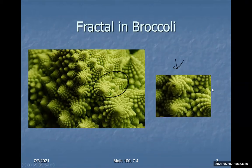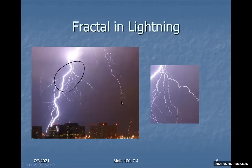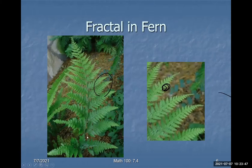Here's a broccoli — if you zoom in on a part, it looks very much like the whole, so you can see smaller and smaller structures. Here is a snowflake — zoom in and you can see tiny versions of the snowflake. Here's lightning, and you see all these branches; take one of these parts and you can see more branching.